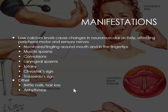Additional manifestations include possible laryngeal spasms, convulsions, or muscle spasms. Patients may have neuropathies around the mouth or in the fingertips, as well as brittle nails, hair loss, and arrhythmias.